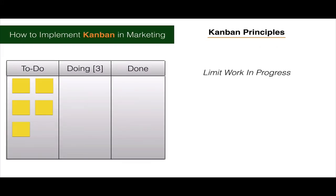With Kanban, the principles are: number one, you need to limit the number of work in progress. For example, if you look at the doing column, you have the number three in brackets — you need to set a limit to the number of tasks you're doing at any particular time. You cannot just multitask non-stop; that kind of multitasking reduces productivity. Also, you need to manage the flow of work — make sure you complete what you're doing before you move on to another task.